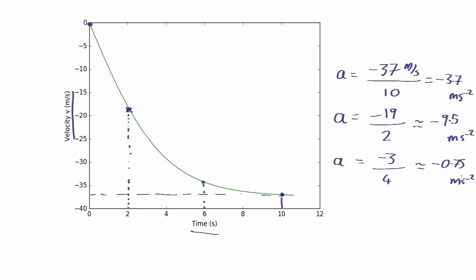So this is a bit tricky. How do we know what the acceleration is? We know acceleration is the rate of change of speed. But it's constantly changing here because acceleration over the entire thing is minus 3.7. The acceleration over the first two seconds is minus 9.5. The acceleration over the last four seconds is minus 0.75. So if we want to work out what the acceleration is in F equals MA, what do we use?